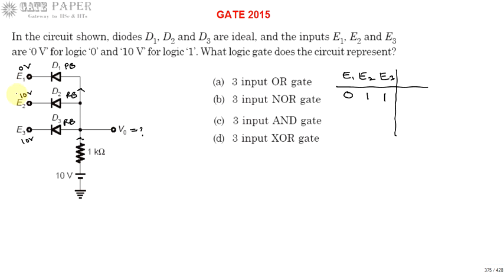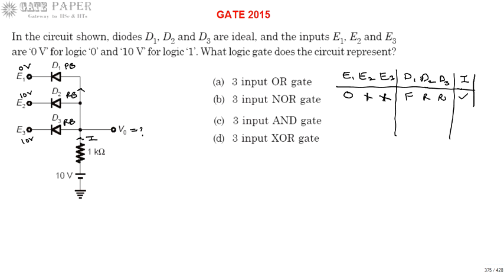Similarly, if E2 is at 0 while the other two are at 10 volts, or if E3 is at 0 while the other two are at logic 1 — in all these cases, always one of the diodes is going to be forward biased and the other two will be reverse biased. So with D1 forward biased, current flows through the 1 kΩ resistor. Since the diode acts as a short circuit and is connected to ground, the entire 10 volts drops across the 1 kΩ resistor itself. So V0 is effectively connected to ground, meaning V0 = 0 volts.